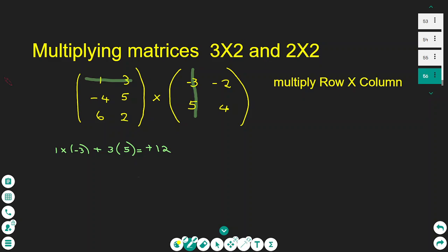The method we use is we multiply each row by each column, and I'll make one example on the board. 1 times negative 3, and then I add 3 times 5, and this gives me plus 12. So the first number we put in the new matrix is 12.